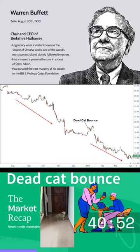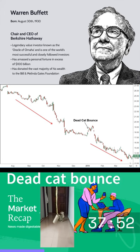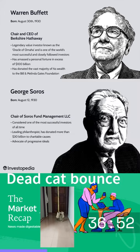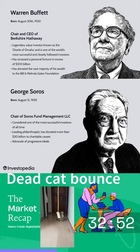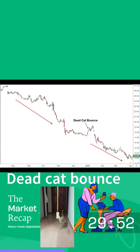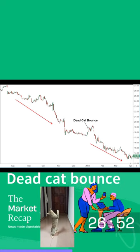However, this increase in price does not last long, as the underlying fundamentals of the stock or the market are still weak. As soon as the bargain hunters and short sellers exit the market, the supply of the stock exceeds the demand again and the price resumes its downward trend. This is why a dead cat bounce is considered a continuation pattern, not a reversal pattern.